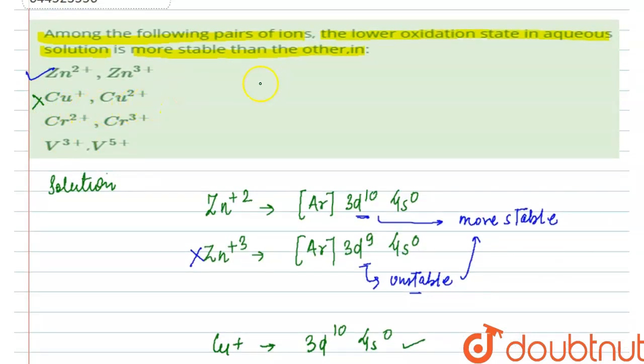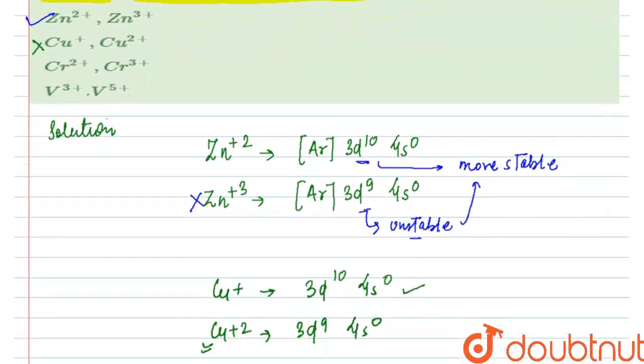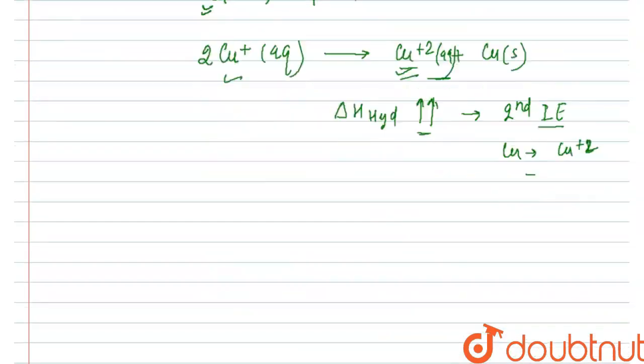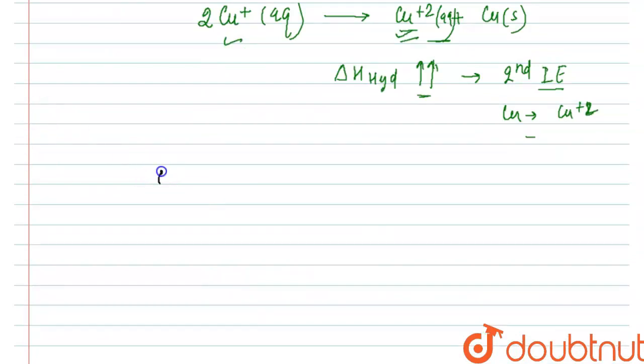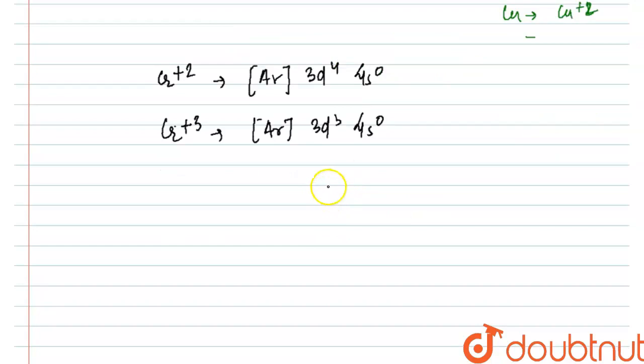Now let us have a look at the third one where we have Cr+2 and Cr+3. So we have Cr+2 which will have the configuration of [Ar] 3d4 4s0. Similarly, Cr+3 will have [Ar] 3d3 4s0.